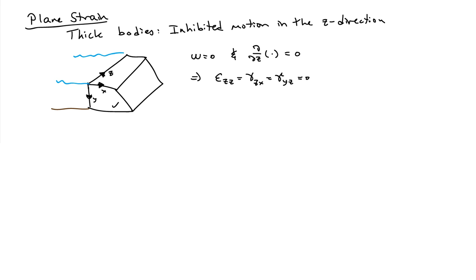We also assume that nothing changes in the z direction, so the derivative with respect to z of any quantity equals zero. If you plug that into the kinematic relationships, the strain displacement relationships, you find that the strains associated with the z direction are all zero. The normal strains and the shear strains associated with z are equal to zero.